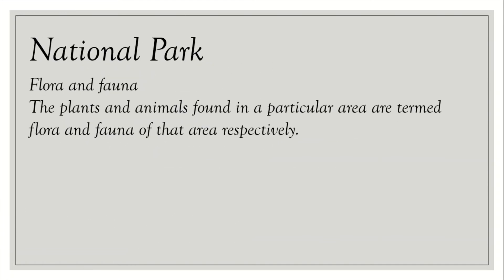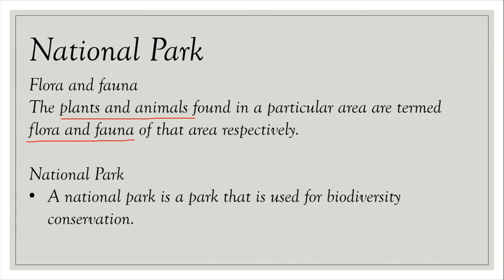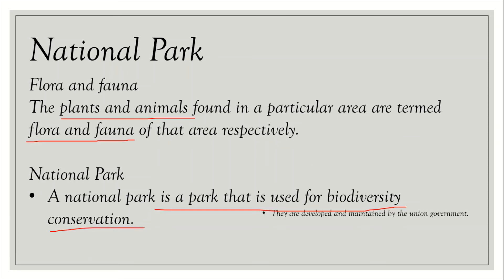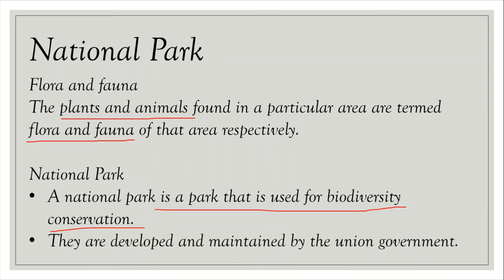Flora and fauna. The plants and animals found in a particular area are termed the flora and fauna of that area respectively. National park: a national park is a park that is used for biodiversity conservation. They are developed and maintained by the union government.